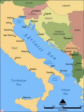The Adriatic Sea is a body of water separating the Italian peninsula from the Balkan peninsula. The Adriatic is the northernmost arm of the Mediterranean Sea, extending from the Strait of Otranto to the northwest and the Po Valley. The countries with coasts on the Adriatic are Albania, Bosnia and Herzegovina, Croatia, Italy, Montenegro and Slovenia. The Adriatic contains over 1,300 islands, mostly located along its eastern Croatian coast.